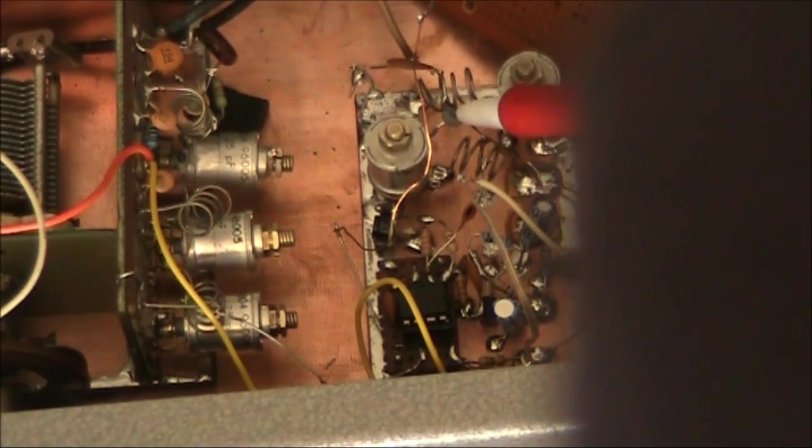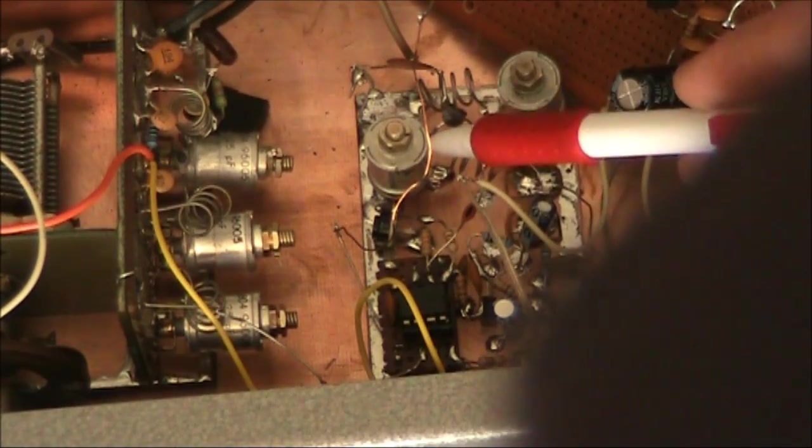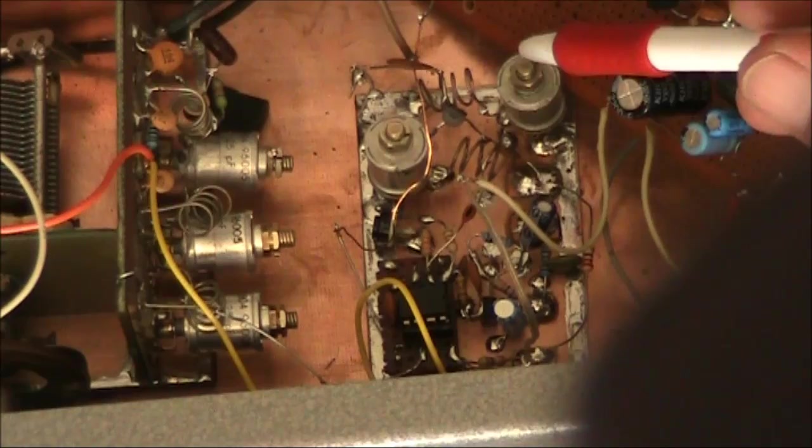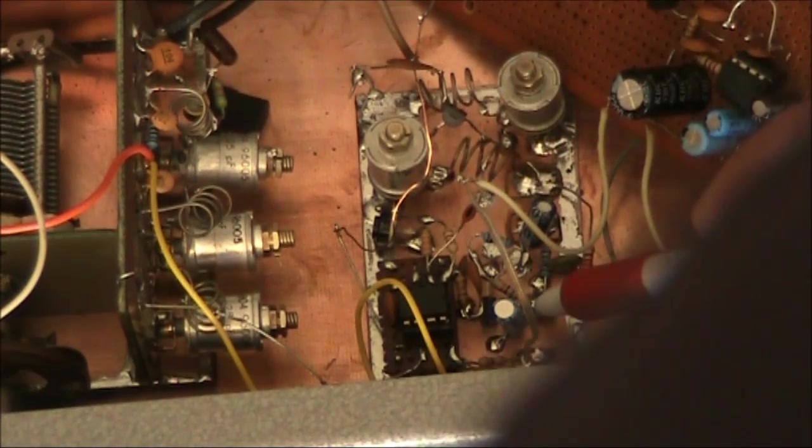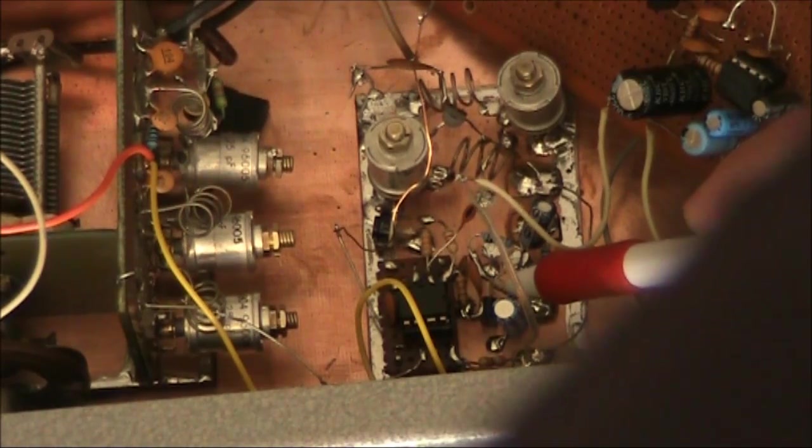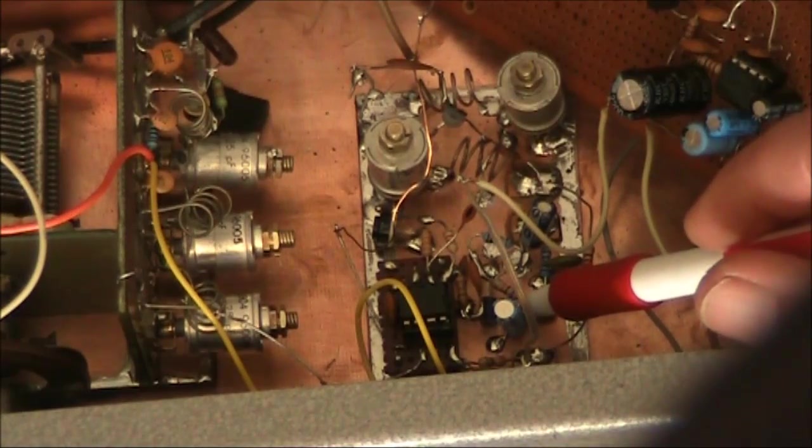On receive, there's an RF preamp, which uses an MPF102. There's two tuned circuits here, to provide some front-end selectivity. The transistor you see here, it's probably not clear, it's just a microphone amplifier, and that will be used for the transmitter stage only.